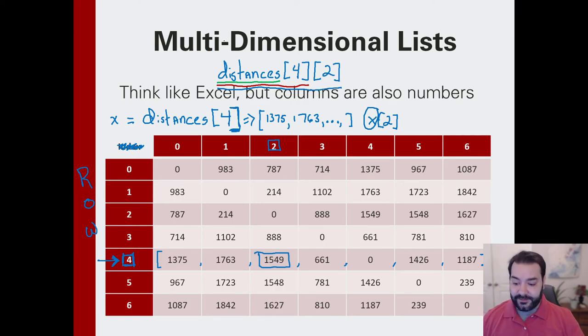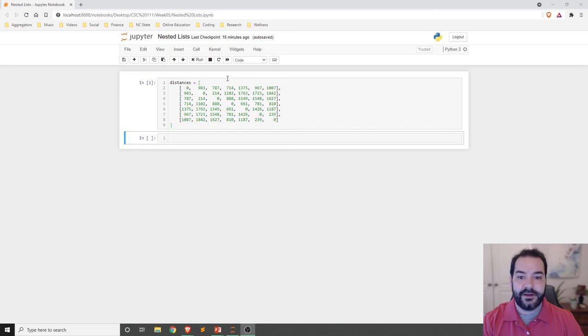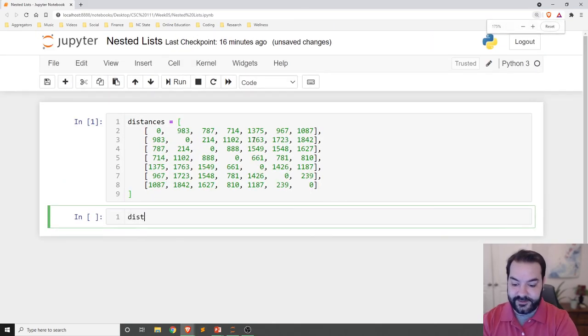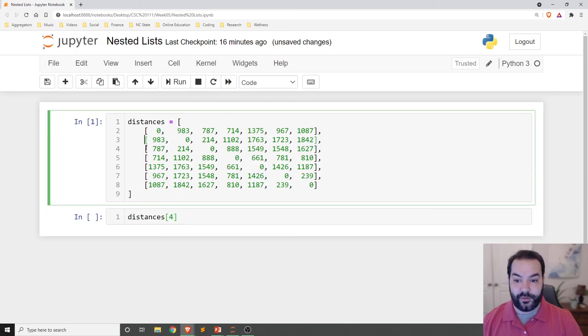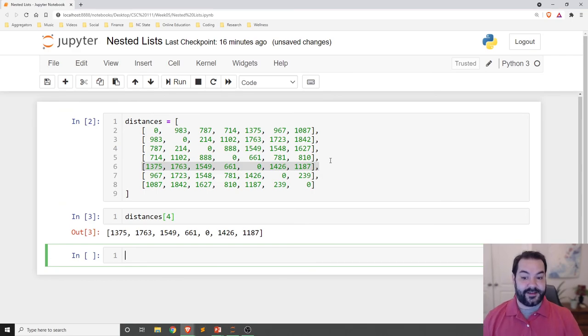And we can see this. So, if I came in and built that out, and I've already cheated because it's a lot of typing of numbers. So, once again, if I simply did distances at four, what I should see is the fourth element in my outer list. So, zero, one, two, three, four. So, I should see this fourth row. And that's exactly what I see.